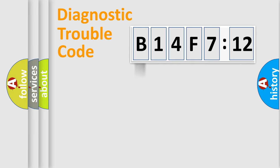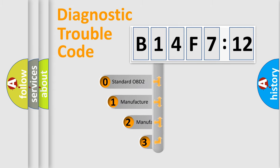Powertrain, Body, Chassis, and Network. This distribution is defined in the first character code.